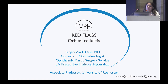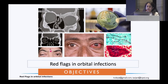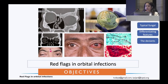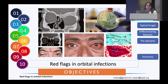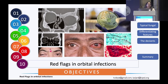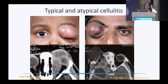I'm going to talk to you about red flags in cellulitis. The objectives of my presentation are to take you through certain aspects of bacterial and fungal cellulitis, the differentiating features between the two, and then when, how, and what you do in cases where you can't figure head or tail of what is happening. Let's go through certain aspects of bacterial cellulitis first.